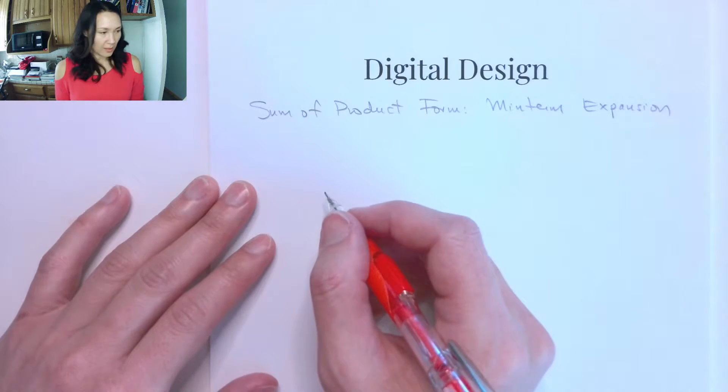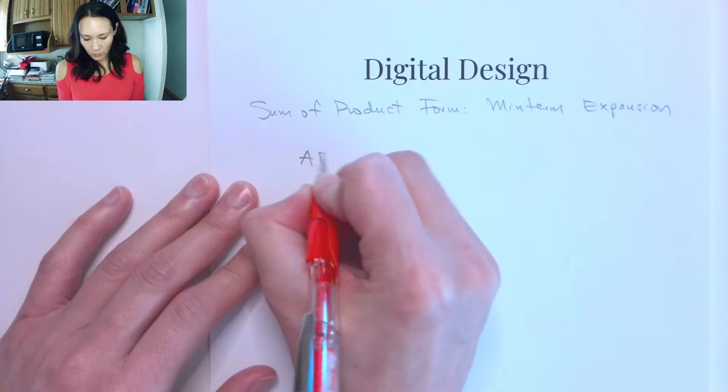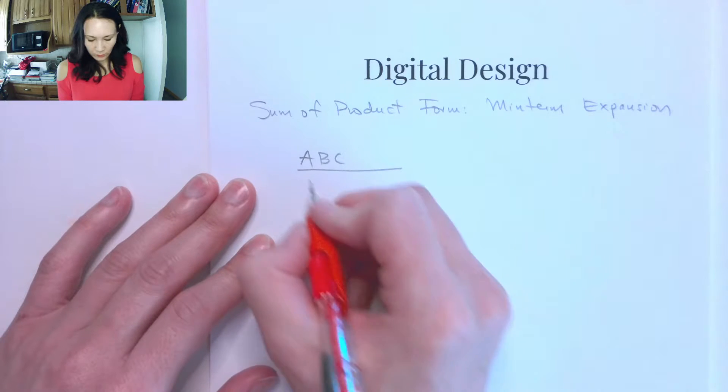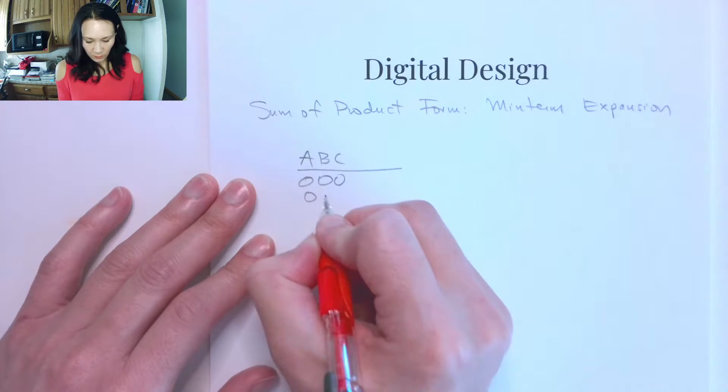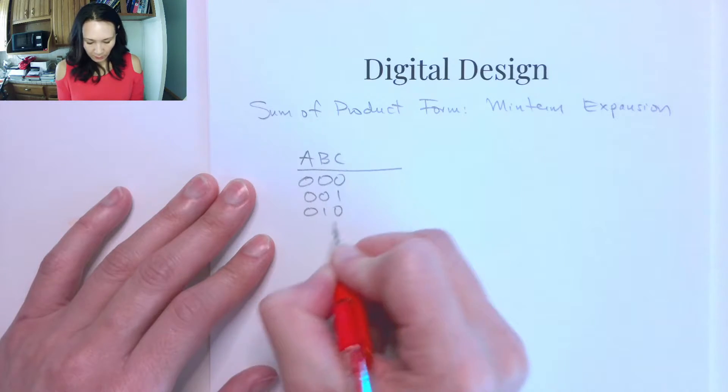Hi students. In the last video, we learned how to write a function from a truth table. Let's do a continuation of that example.